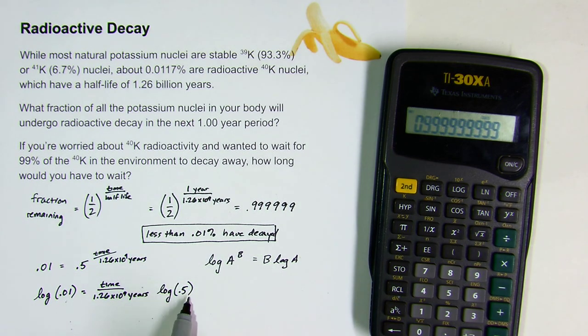Log of 0.01, the log of 0.5 are numbers. So if I rearrange this to solve for time, time is going to equal 1.26 times 10 to the ninth years times log of 0.01 divided by log of 0.5.